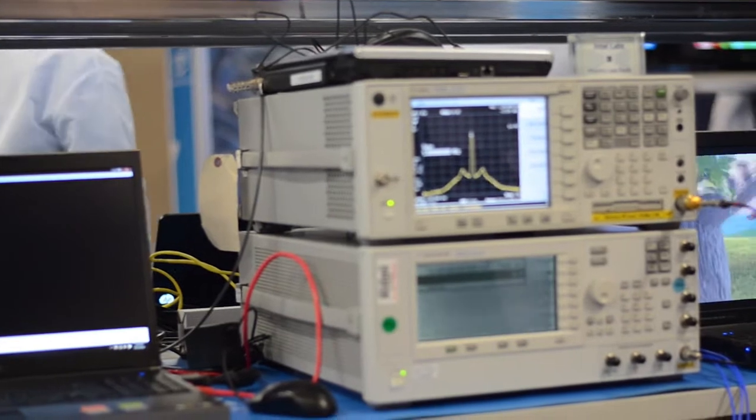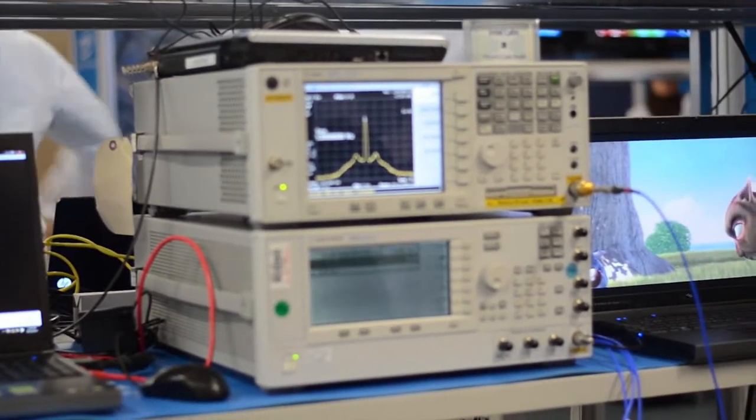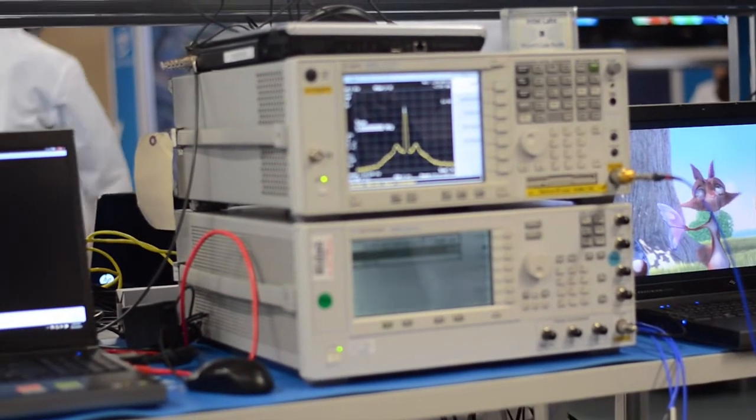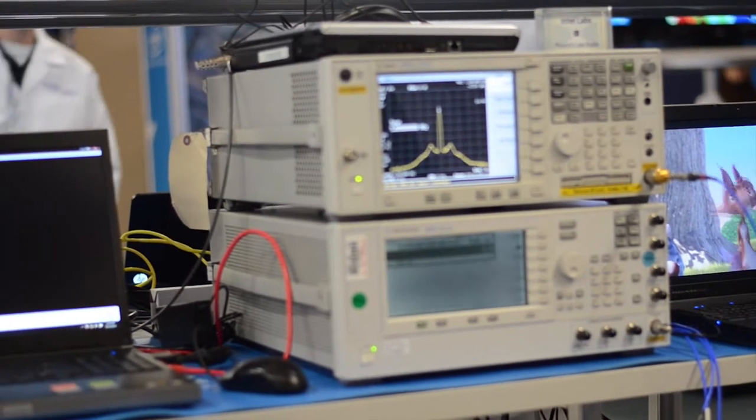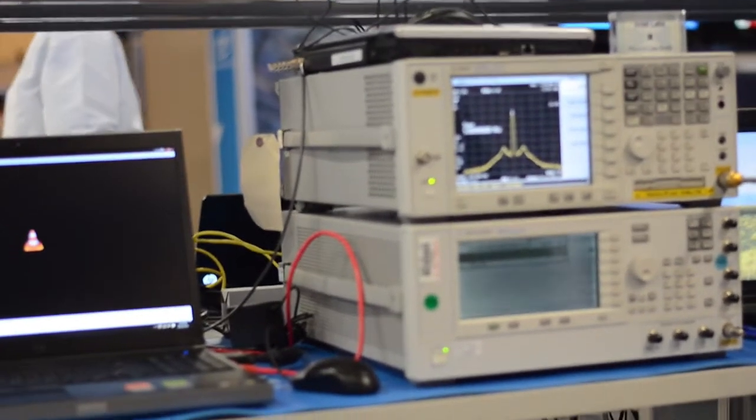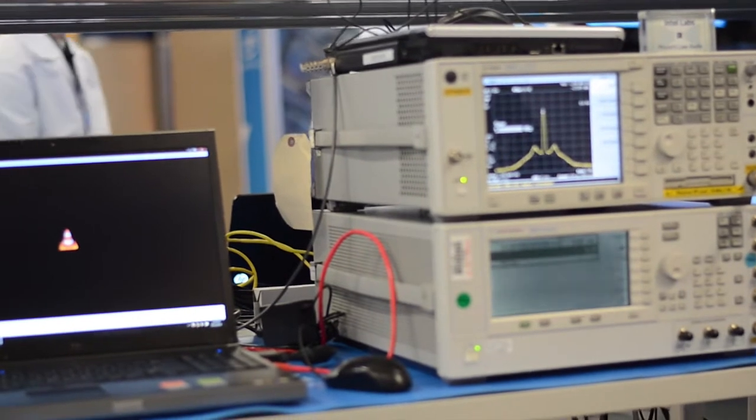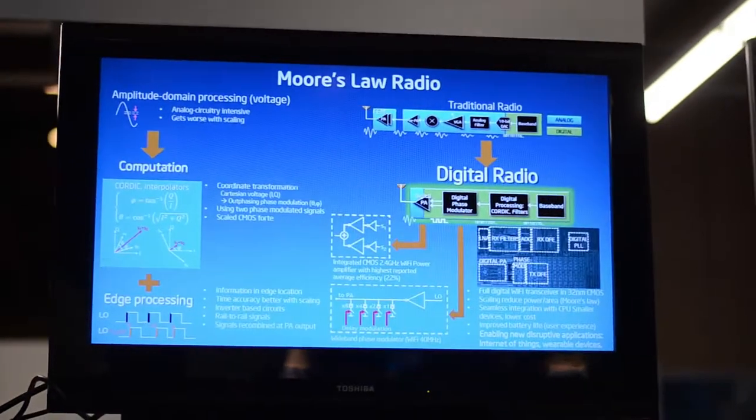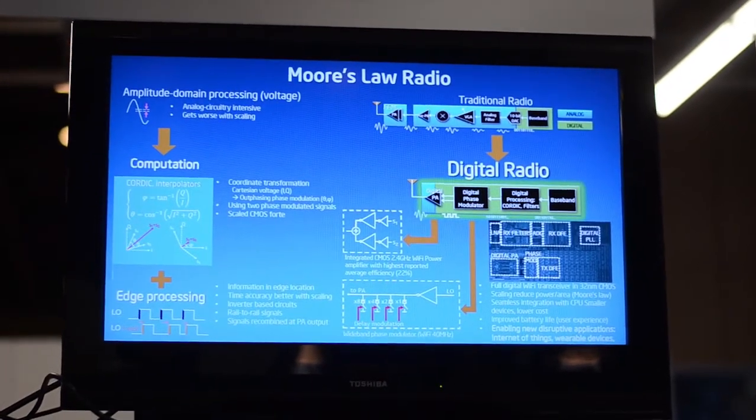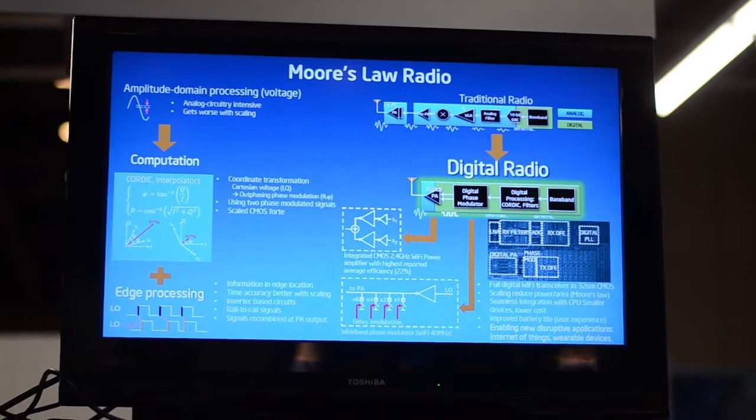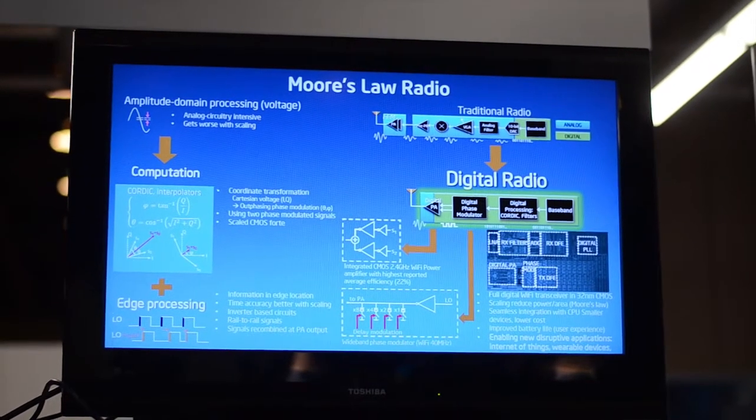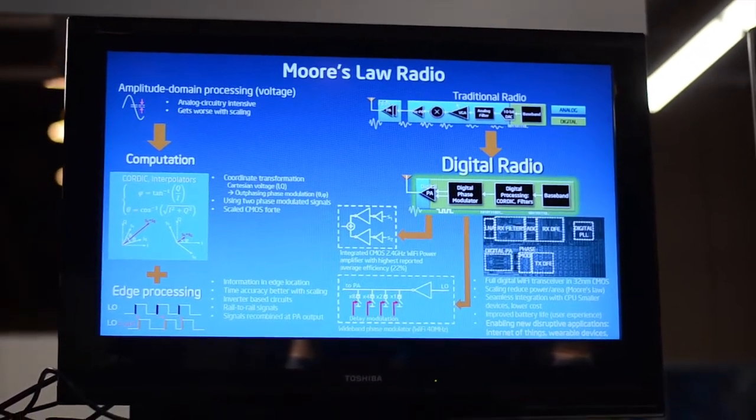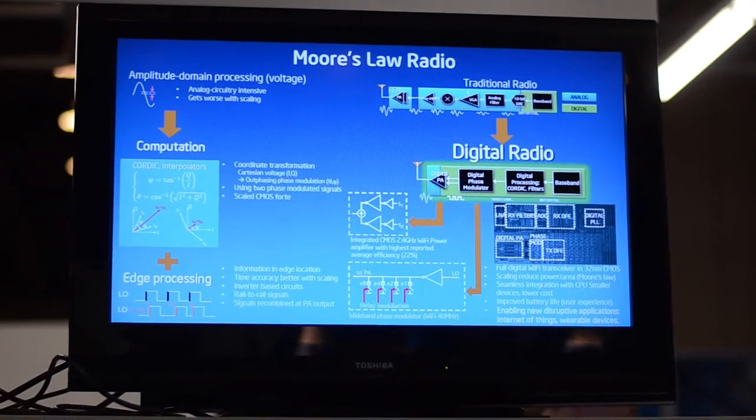So there are all sorts of issues that are happening. So what we're trying to do is, is there a way of transforming the problem from this amplitude domain processing, where the information is encoded in the voltage levels, to something that is a computation problem. Because if it becomes a computation problem, this can basically be solved by a big digital circuit, and this would be perfect to be implemented in this super-scaled technology, and it will scale together with the digital.